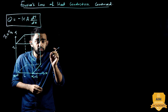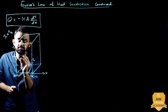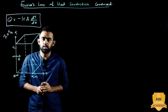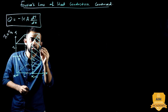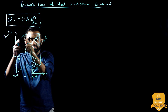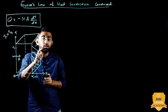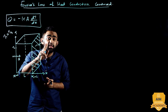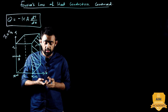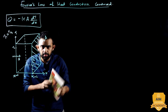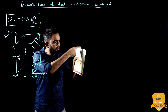Heat will always naturally flow from higher temperature to lower temperature. So this is the direction of heat flow. This is our surface area — the area should always be perpendicular to the direction of heat flow. In this plane slab, heat flow is the same, and the direction of heat flow is perpendicular to the area.